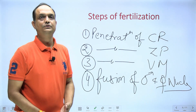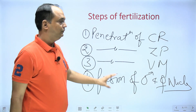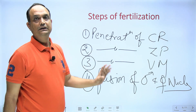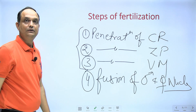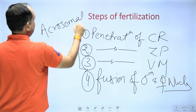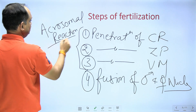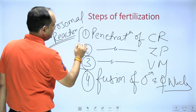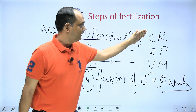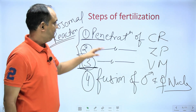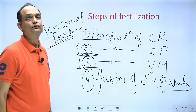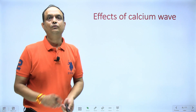As soon as the male gamete contacts the corona radiata, the acrosomal reaction starts, releasing enzymes that penetrate all three layers. If the acrosomal reaction does not happen, the spermatozoa will not be able to pierce any of these three layers. So penetration of all three layers is possible only because of the acrosomal reaction occurring at the head of the spermatozoa.